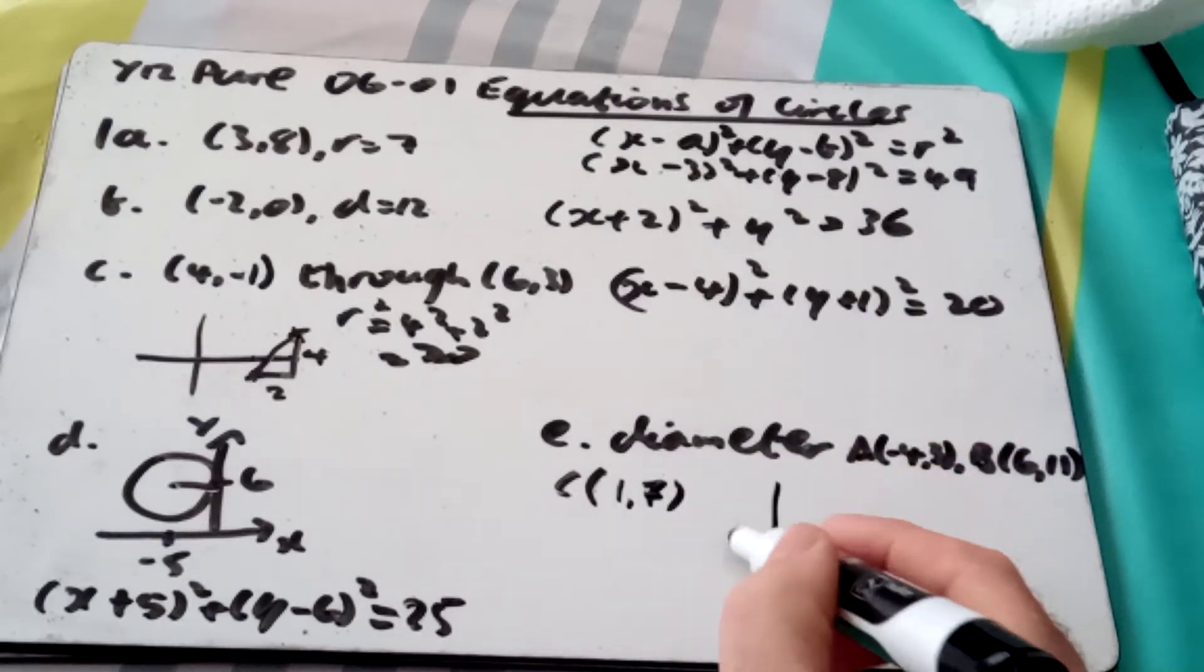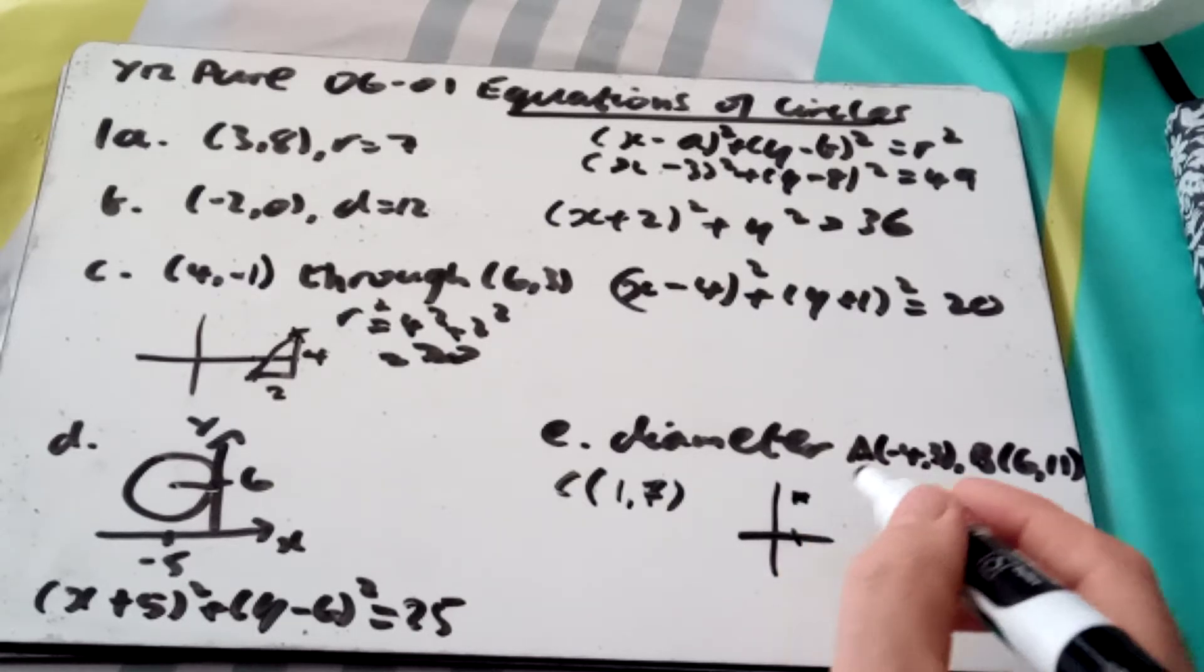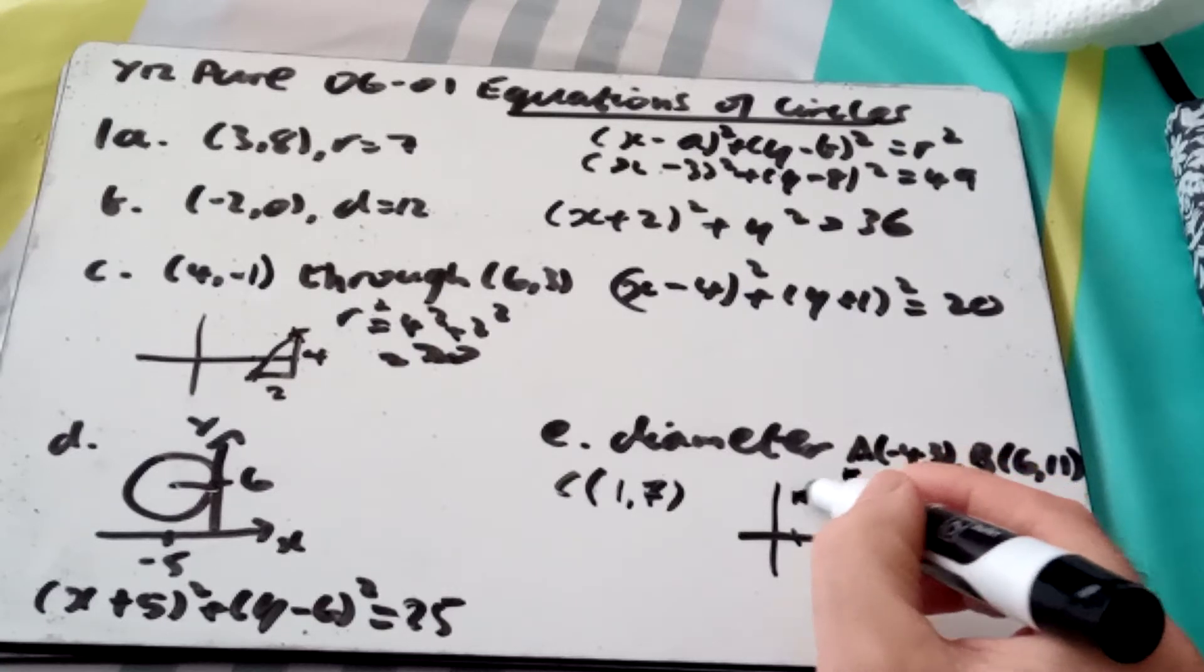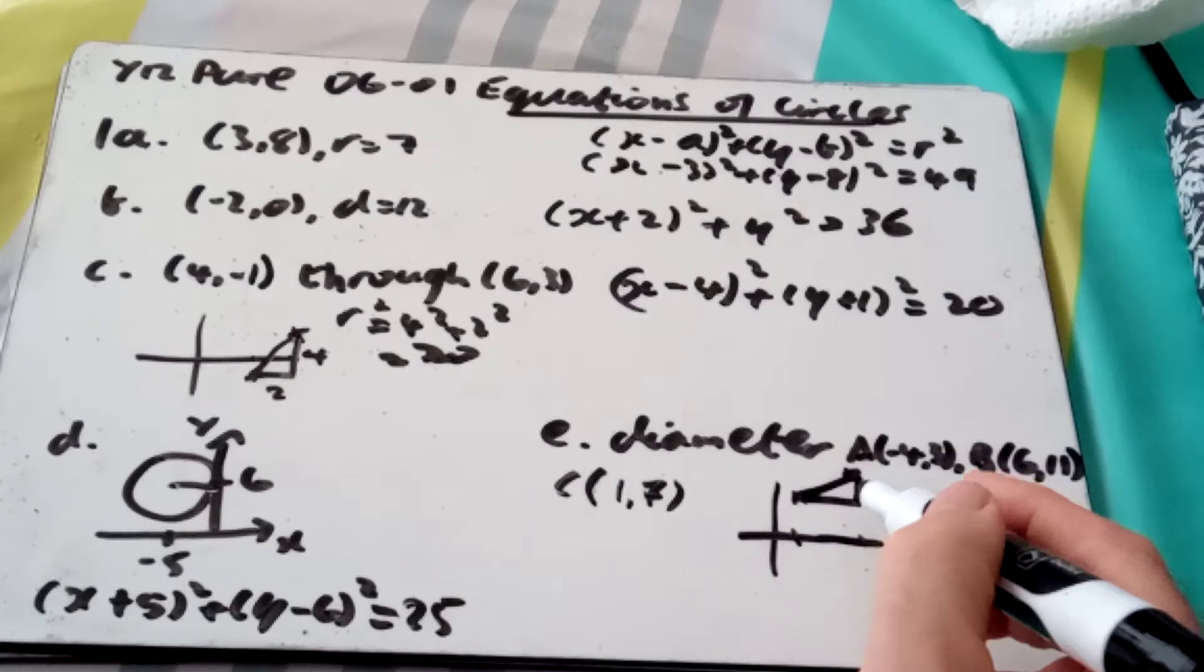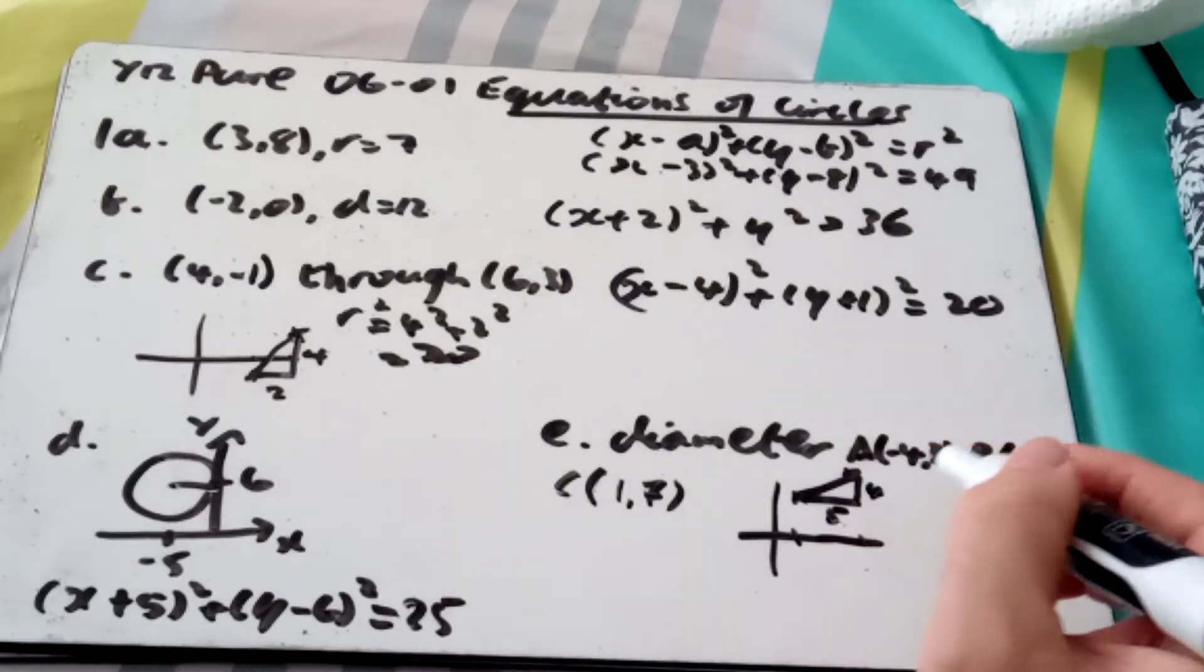And if I do another quick sketch as well, the point (1, 7) is there, and the point (6, 11) is all the way up here. So I've gone from 1 to 6 there, which is 5 along, and from 7 to 11, which is 4 up.